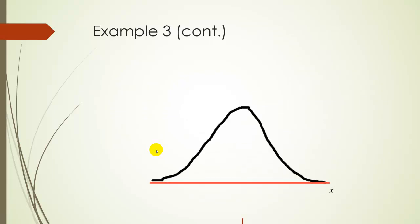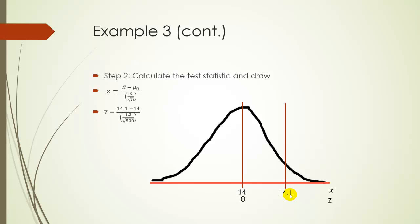Okay, so drawing our curve. Again, we're drawing this as if H-O is true. So it's centered around 14. And of course, our Zs are always centered around 0. Let's calculate our test statistic. Remember, that's associated with our sample average of 14.1. So using our formula, 14.1 minus 14 divided by 1.2 over the square root of 500, and we get 1.86. So that is our test statistic.